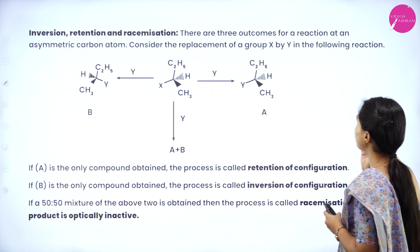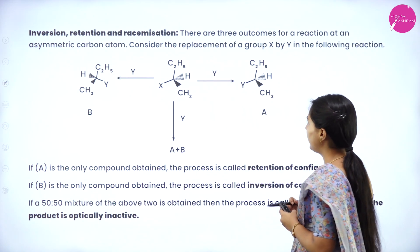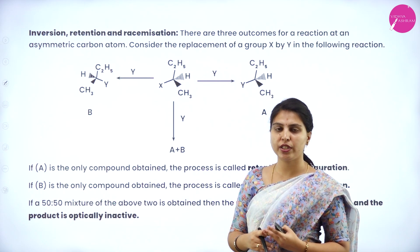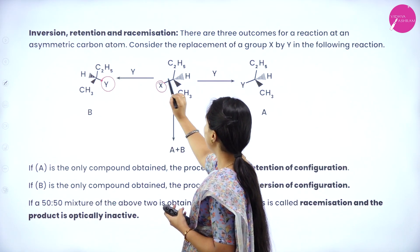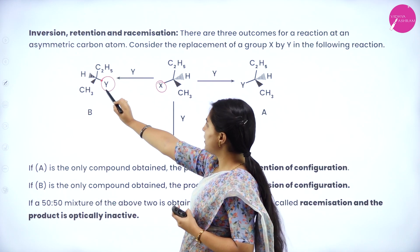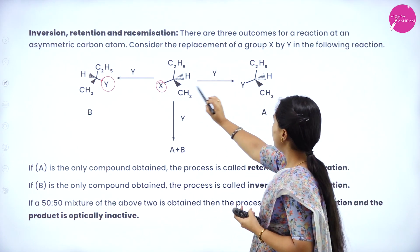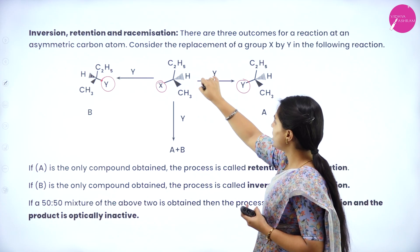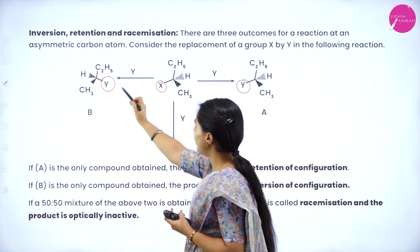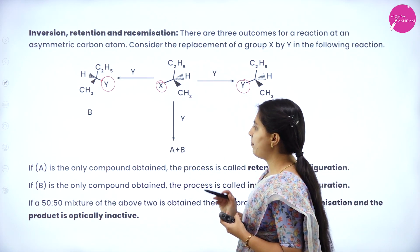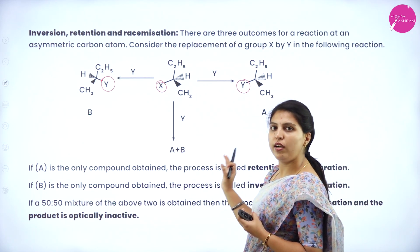Inversion, retention and racemization — there are three outcomes for a reaction at an asymmetric carbon atom. Consider a replacement of a group X by Y. For retention: the same configuration is seen in both reactant and product. For inversion: the configuration is opposite. For A plus B racemization: two enantiomers form a racemic mixture, called racemization.